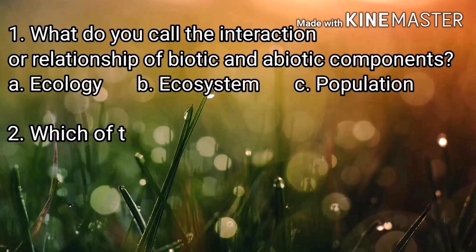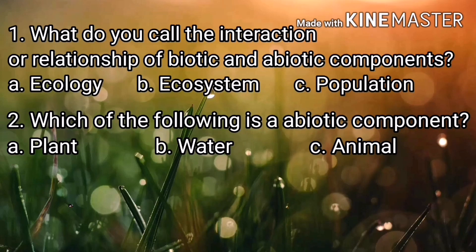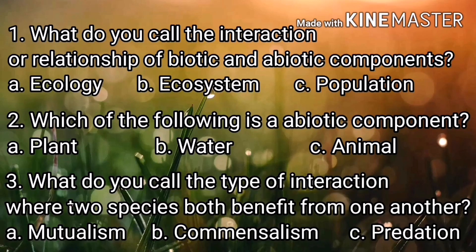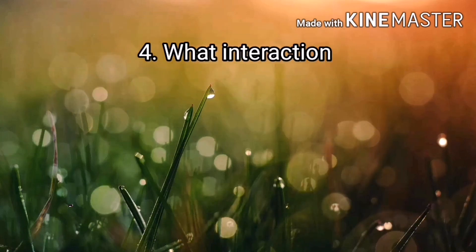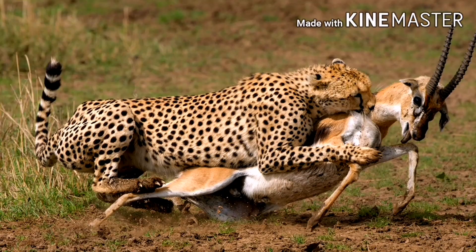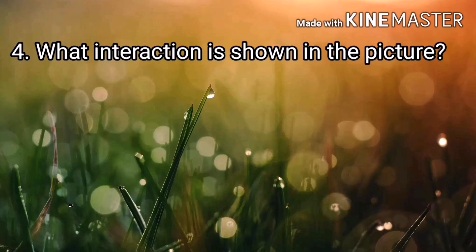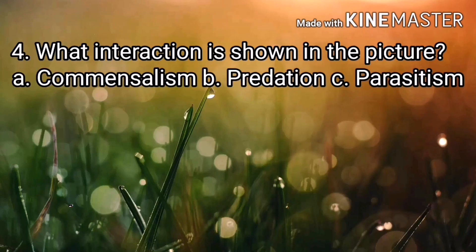Number 3: What do you call the type of interaction where two species both benefit from one another? A. Mutualism, B. Commensalism, C. Predation. Number 4: What interaction is shown in the picture? A. Commensalism, B. Predation, C. Parasitism. Number 5: Why do predators tend to compete? A. There are many resources, B. It is just to show their strength, C. There are limited food that they need.